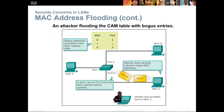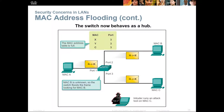Here's a graphical representation: an intruder runs an attack tool on a host, starts flooding the CAM table, and the switch begins behaving like a hub, sending those bogus MAC addresses out on all ports.